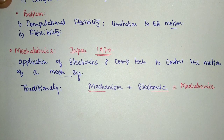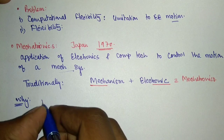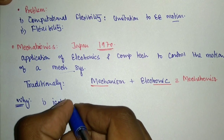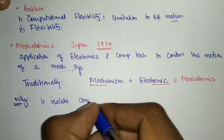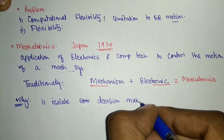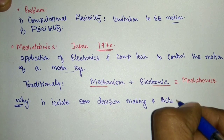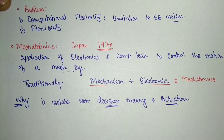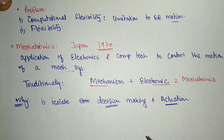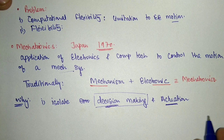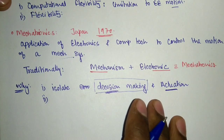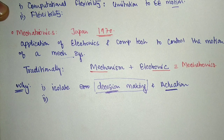The basic idea behind using mechatronics is to isolate the decision-making and computation from the actuation. Earlier, the linkage was doing both operations — actuation as well as decision making. Now we can make decisions separately with the help of an electronic device, and we have a separate actuator to execute the desired motion. This isolation is the core reason why we use mechatronics.